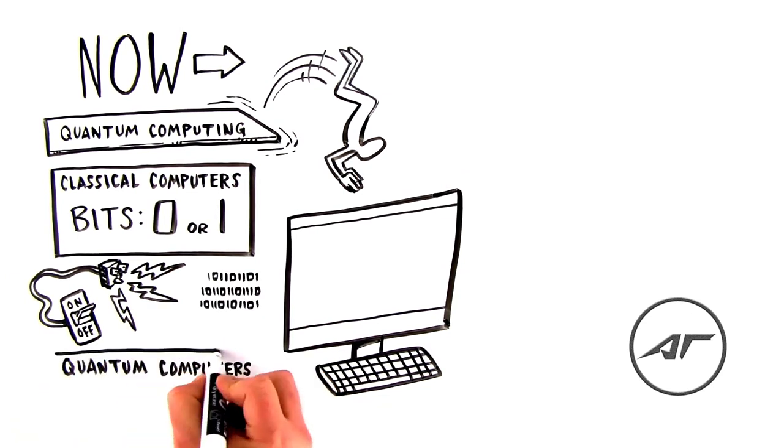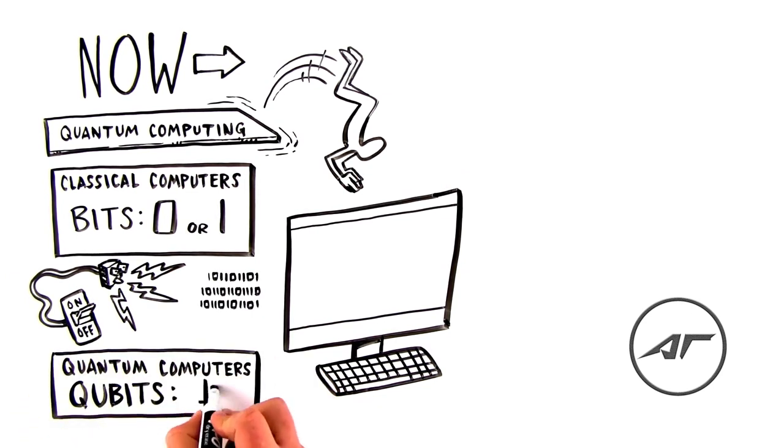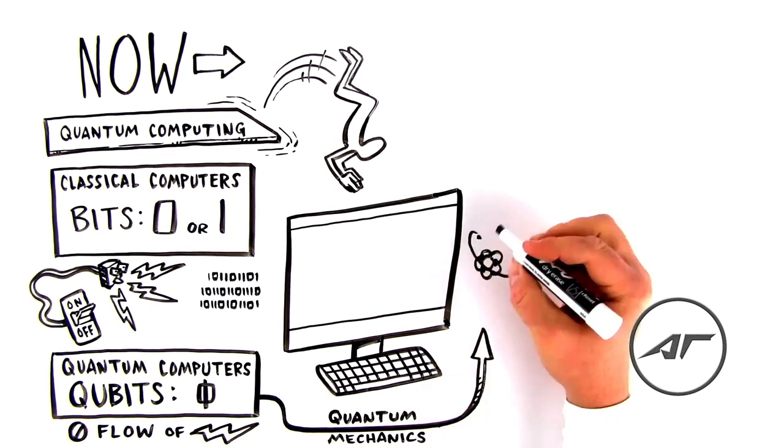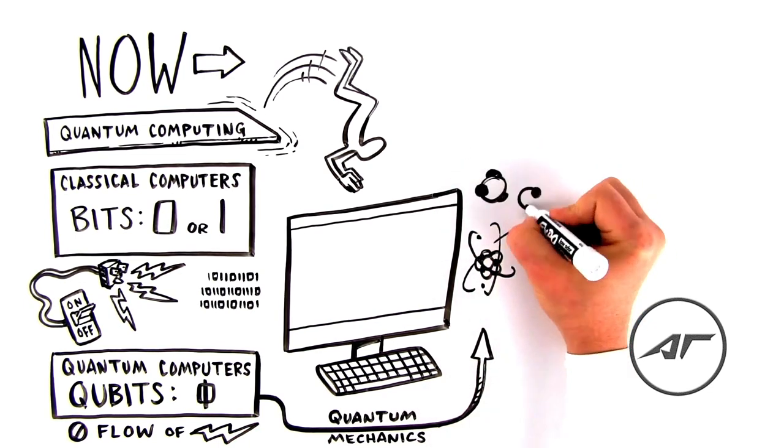Now, quantum computers run on qubits. Instead of being based on the existence of electricity flowing through wires, qubits are based on quantum mechanics, the set of laws governing the behaviour of molecules and atoms.